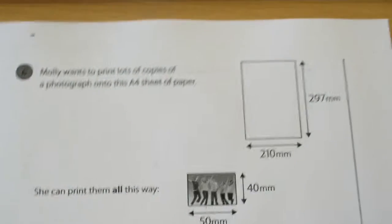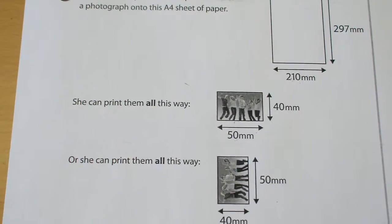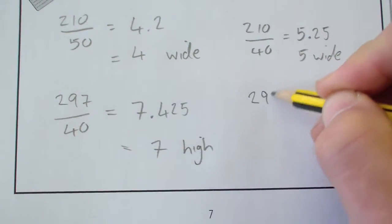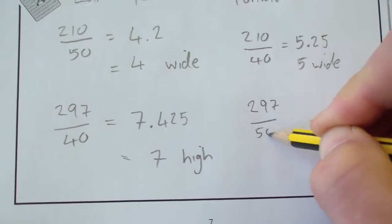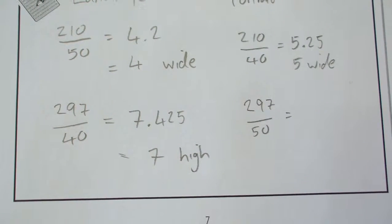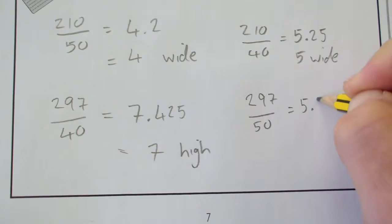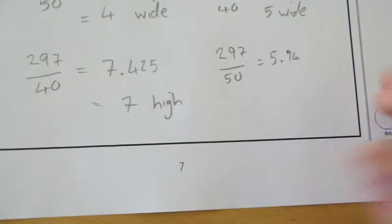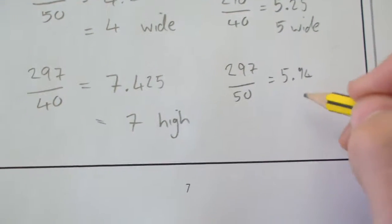And up the side, 297 divided by 50, which gives an answer of 5.94, which means we can have 5 high.